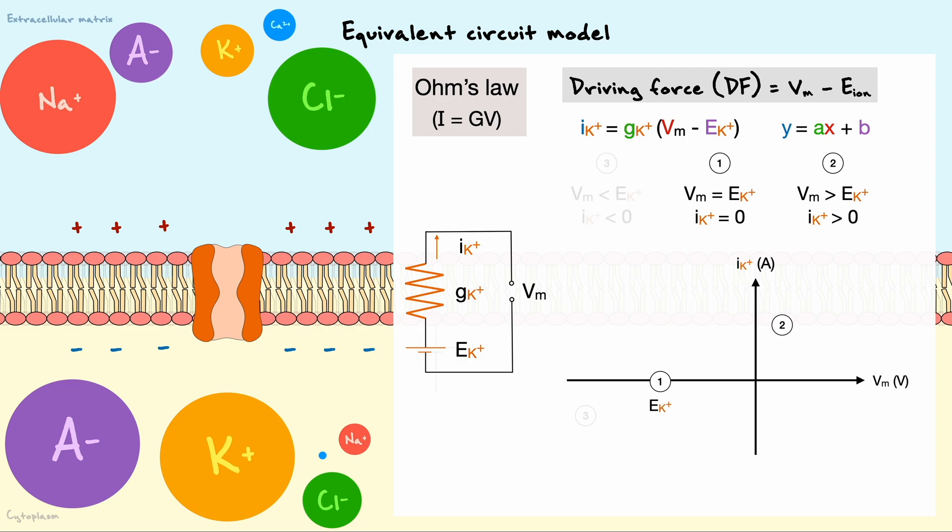On the other hand, if the membrane potential is lower than the equilibrium potential, then the current will be negative and indicate that the potassium is entering the cell. This graph is usually referred to as an IV plot and it allows to illustrate in which direction current flows depending on the voltage. This is a graph that we will see again and again throughout this video.